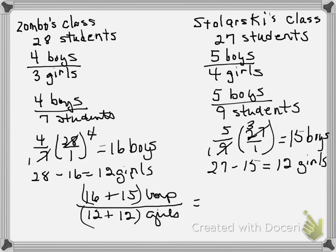16 and 15 is 31 boys to 24 girls. So the ratio of boys to girls in the combined class is 31 to 24.